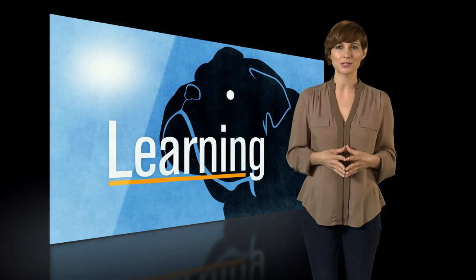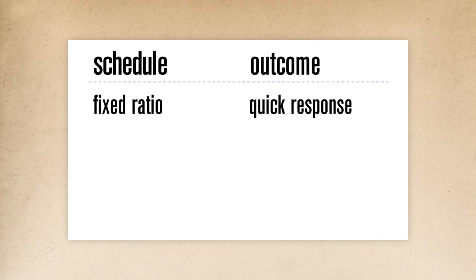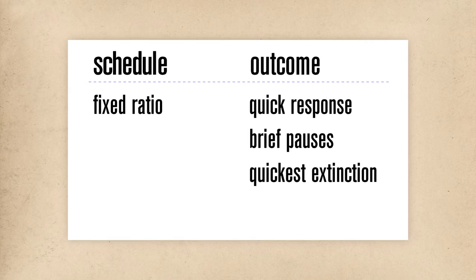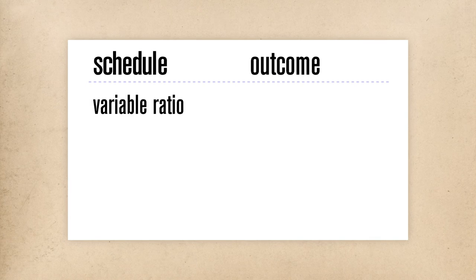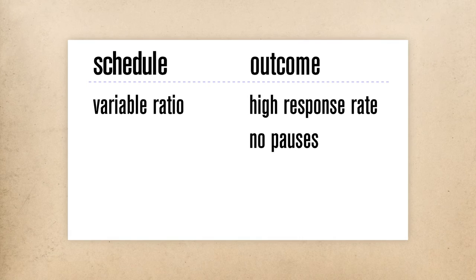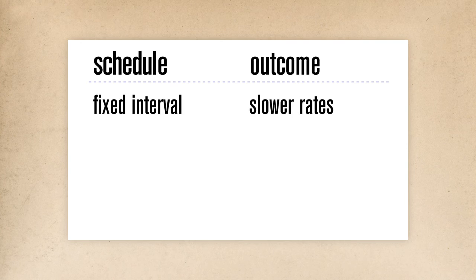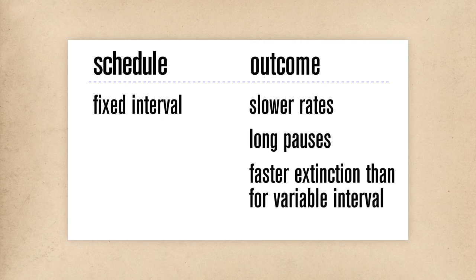Both ratio and interval schedules can be useful depending upon the circumstances. Let's take a brief look at the pros and cons of each type of schedule. A fixed ratio schedule produces quick responding, and higher ratios produce higher response rates. Note that with fixed ratio schedules, there is observed to be a brief pause in responding after each reinforcement, rather than a steady stream of responses. Also, extinction is quickest once reinforcement is stopped. A variable ratio schedule produces a high rate of responding without pauses. Higher ratios produce higher response rates, but extinction is slower than with fixed ratios. A fixed interval schedule produces slower response rates with long pauses in responding after each reinforcement. Shorter intervals produce higher response rates. Extinction rates are faster than for variable intervals.